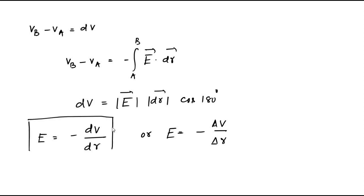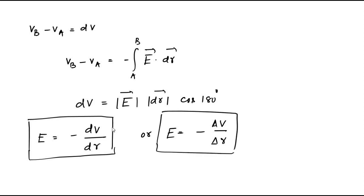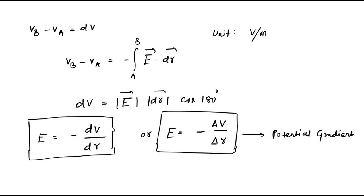This quantity, minus dV/dR or minus ΔV/Δr, is called the potential gradient — the rate of change of potential with respect to distance. This is generally expressed in units of volt per meter, which is the unit of potential gradient.